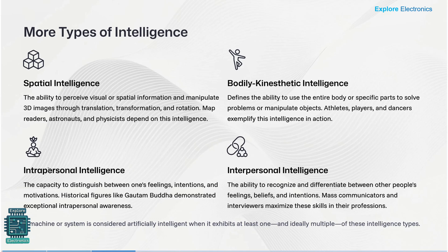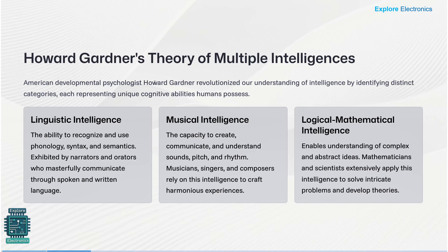Human beings will also have intrapersonal and interpersonal intelligence. Intrapersonal intelligence is the capacity to distinguish between one's own feelings, intentions, and motivations. Gautam Buddha is one of the best examples, demonstrating exceptional intrapersonal awareness. Interpersonal intelligence is the ability to recognize and differentiate between other people's feelings, beliefs, and intelligence — used by mass communicators, speech givers, and interviewers. One will typically excel in the intelligence related to the area they work in.